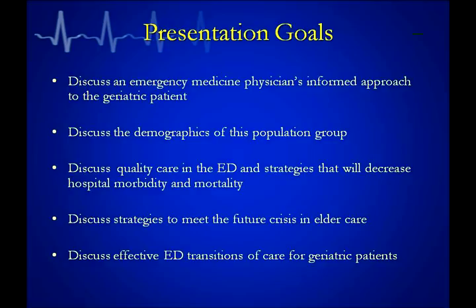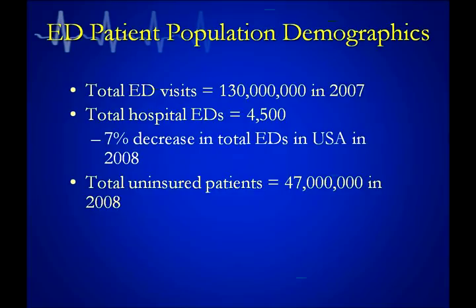One of the most difficult things is ED transitions of care. Do patients go home? Do they get admitted? Are they placed on observation status? Do they go to a hospital-at-home arrangement? Do they go to subacute rehab or an extended care facility for the rest of their lives? Transitions of care, as we know with our own loved ones, are very difficult not only for the patients but also for their families.